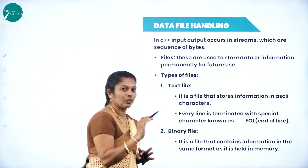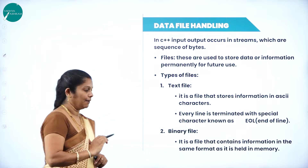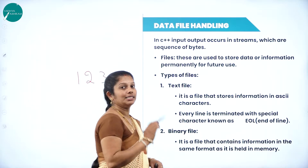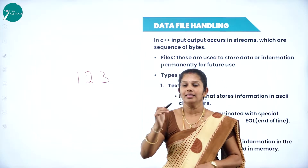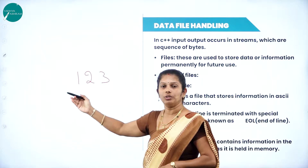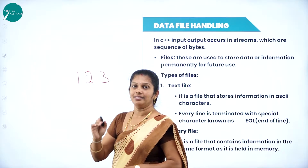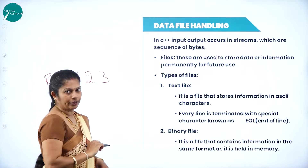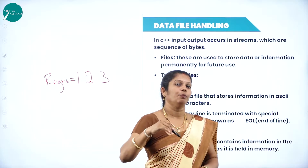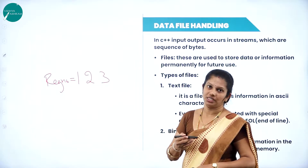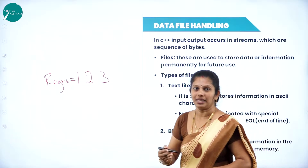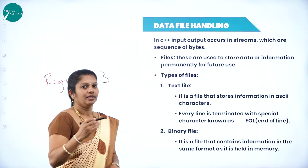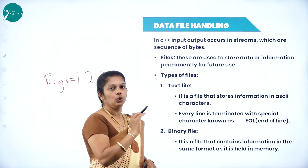This chapter deals with data file handling. For example, '123' is data — raw facts, figures and statistics — because it has no specific meaning on its own. But 'register number = 123' is information, which is processed data having a specific meaning. A file is a basic storage unit in a computer system used to store this data and information.